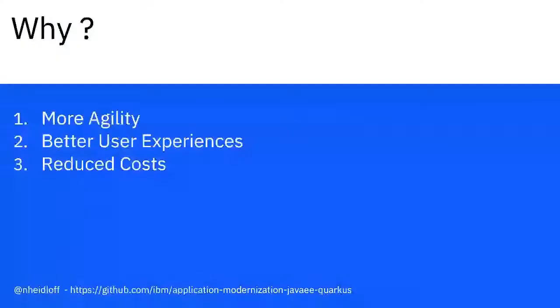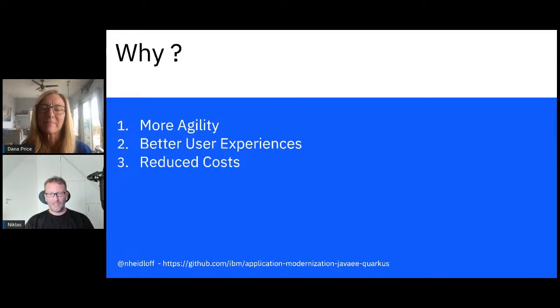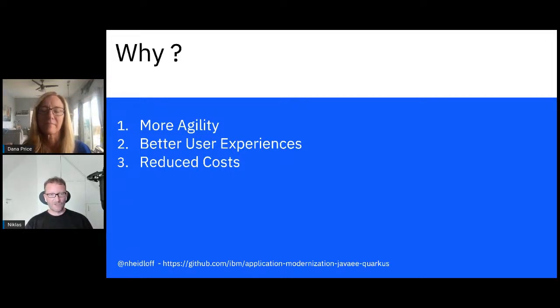I love that video — it entertains me every single time. It's such a nice representation of a different domain and the same concept. So, a short video with a lot of information. Why should you consider modernizing your applications? My number one reason is more agility — you want to be able to innovate faster, make changes faster, or implement improvements and fixes. Cloud native capabilities clearly provide that for you. Better user experiences and reduced costs are my number two and three reasons.